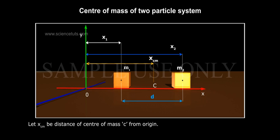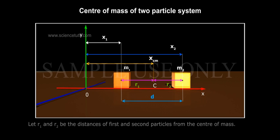Let Xcm be the distance of centre of mass C from origin. Let R1 and R2 be the distances of first and second particles from the centre of mass.